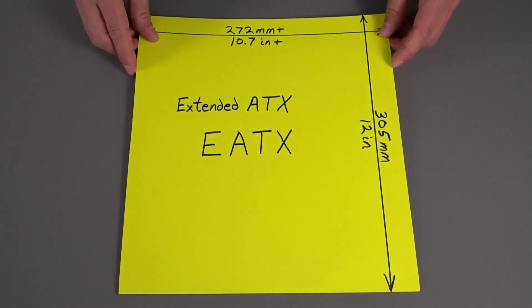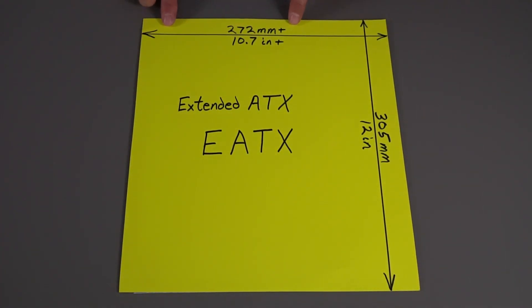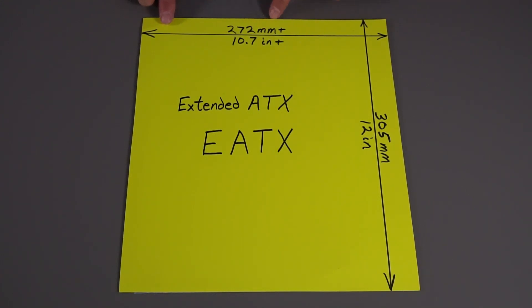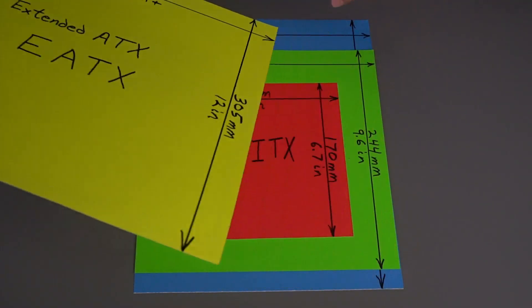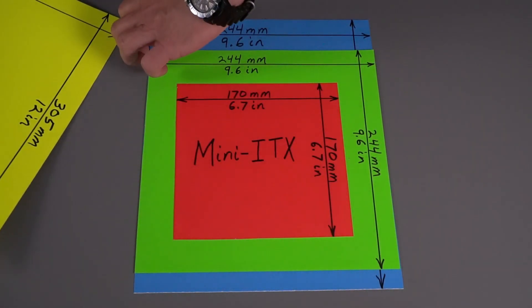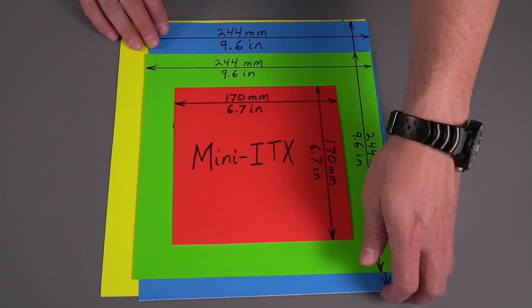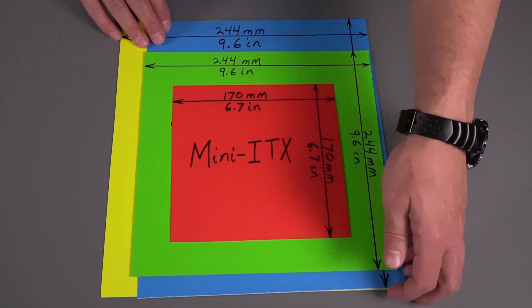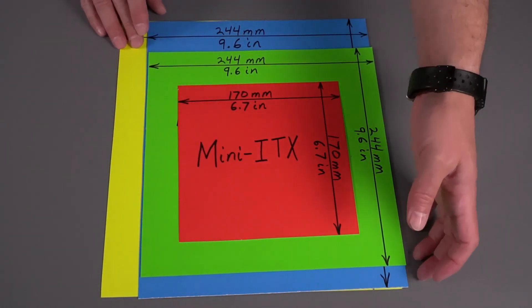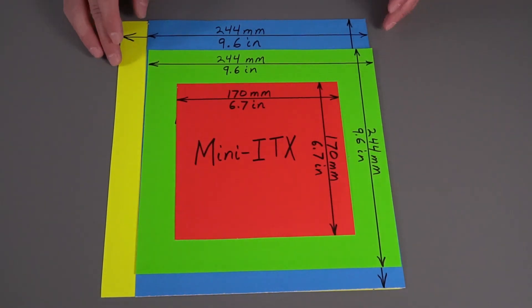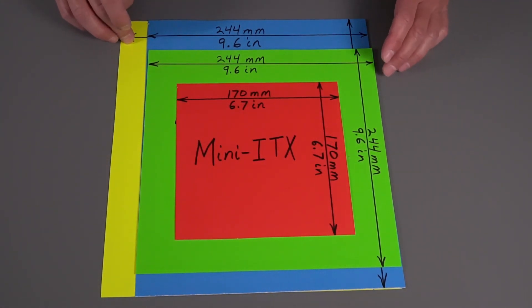Extended ATX motherboards are wider — 272 millimeters or more, with common widths around 277 millimeters — and 305 millimeters in length, just like the ATX standard. They are all wider than the ATX standard, but how much wider varies depending on the manufacturer of the extended ATX motherboard.